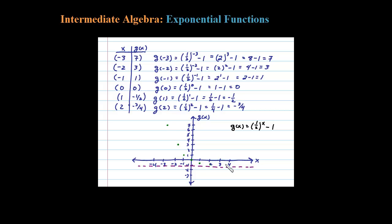It's going to look something like that. Here are my points — you can see the exponential decay. My x and y intercept was the origin, zero zero, and the points get infinitely close to that line y equals negative 1. Another way to look at this is to consider the exponential one-half to the X power shifted down one unit. In any case, this is a rough sketch of this function G of X.